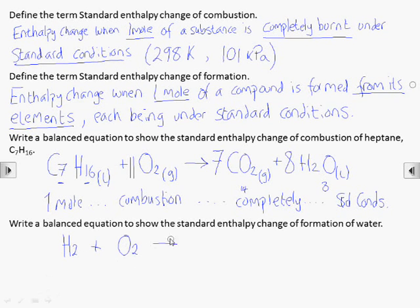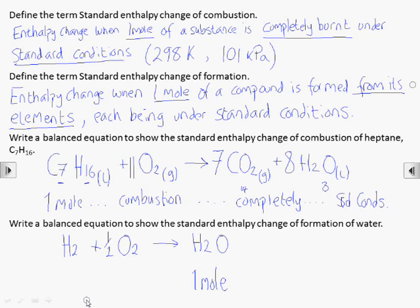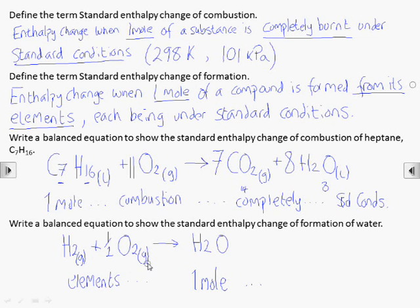In the same way, if we form 1 mole of water from hydrogen and oxygen molecules, then we need 1 mole of hydrogen and half a mole of oxygen. Note that we can't multiply the numbers up in front to get rid of the fraction — the definition says this is the enthalpy change for making 1 mole of water, not 2.